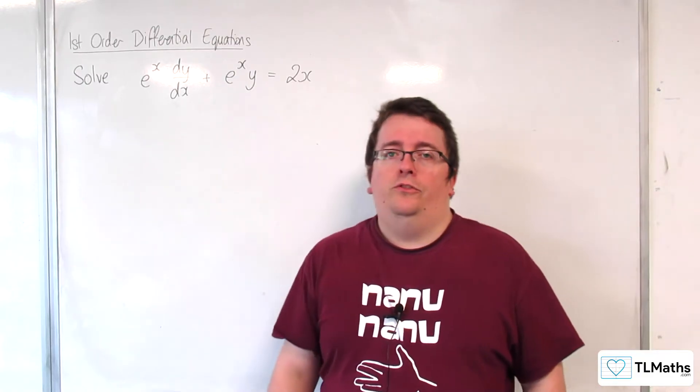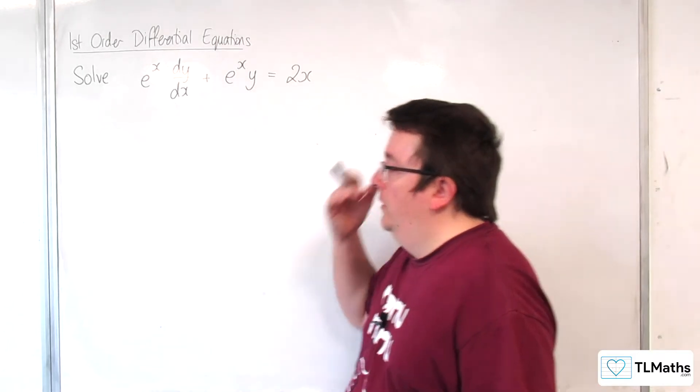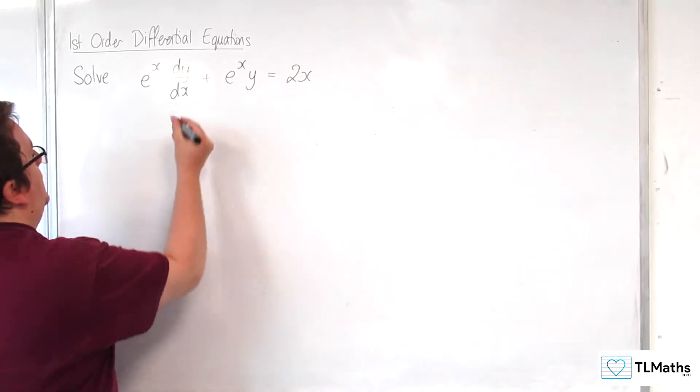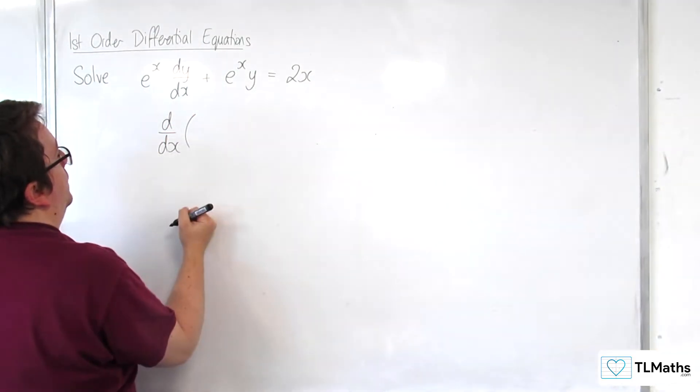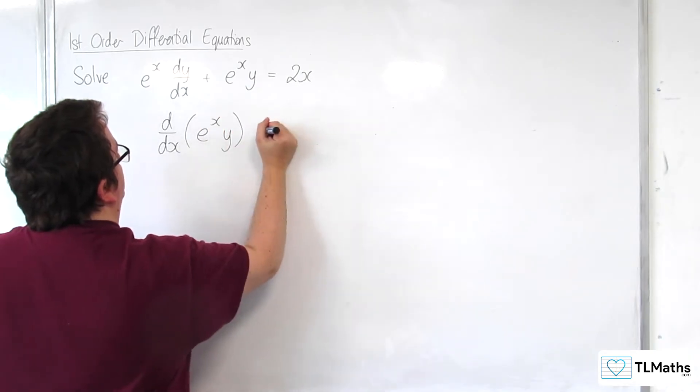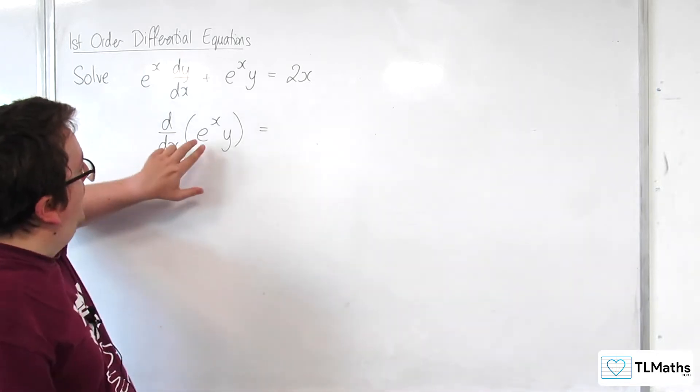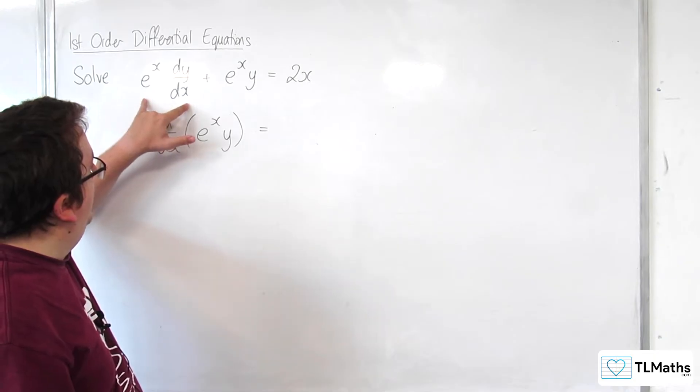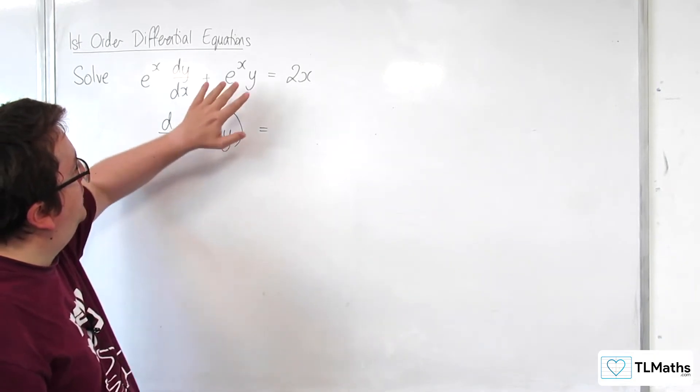What do you mean? Well, think about doing the product rule backwards. So, this here is the derivative of e to the x times y. Now, I'll show you why. Because e to the x times the derivative of y is that, plus y times by the derivative of e to the x is that.